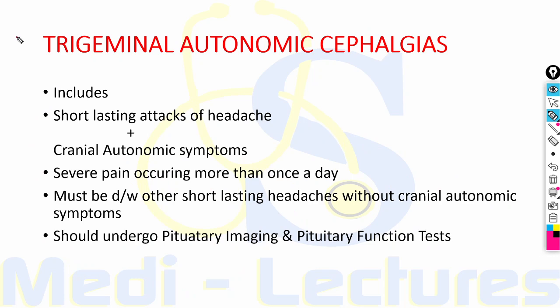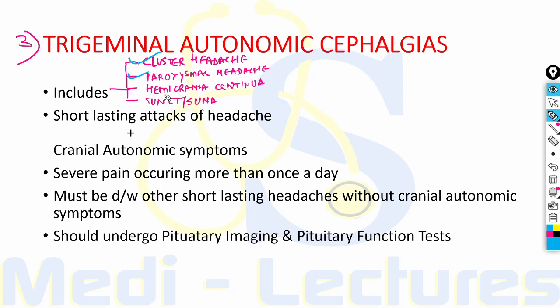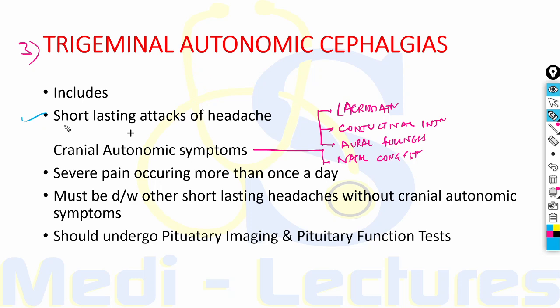The trigeminal autonomic cephalgias (TACs) include cluster headache, paroxysmal hemicrania, hemicrania continua, and SUNCT and SUNA. SUNCT is short-lasting unilateral neuralgiform headache attacks with conjunctival tearing; SUNA is short-lasting unilateral neuralgiform headache with cranial autonomic symptoms. TACs usually present with short-lasting attacks of headache along with cranial autonomic symptoms including lacrimation, conjunctival injection, oral fullness and nasal congestion. Due to oral fullness and nasal congestion, these can be misdiagnosed as sinus headache.